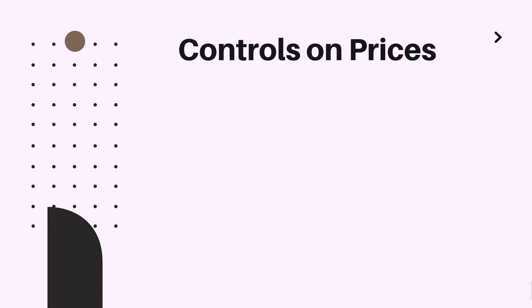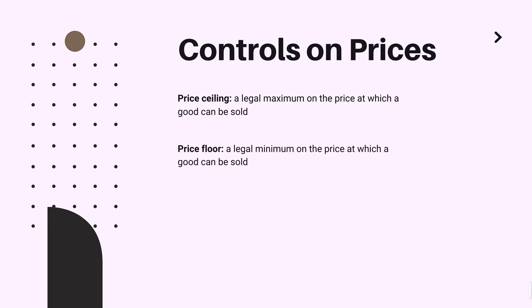Let us start our discussion from controls on prices. As we have already discussed, there are two types of controls: one is the price ceiling, which is a legal maximum on the price at which a good can be sold, and the second one is the price floor, which is a legal minimum on the price at which a good can be sold. Now let us try to understand how these regulations impact the market in general.